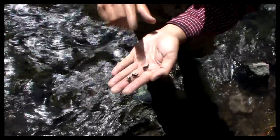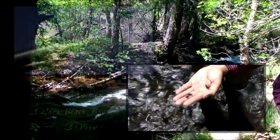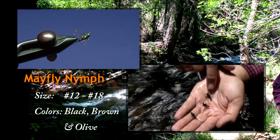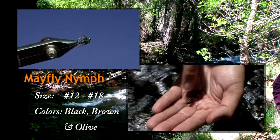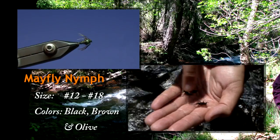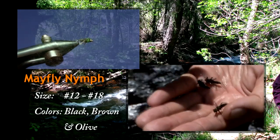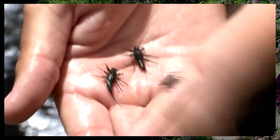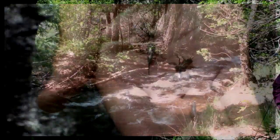The nymphal stage usually occurs for about one year. And then when the water temperature is right, you can also look at this bug on his wing case, right in back of his head — the bug is fairly dark. The wing cases get dark when the bug is getting ready to hatch. So the green drakes should be hatching here probably within the next couple of weeks.